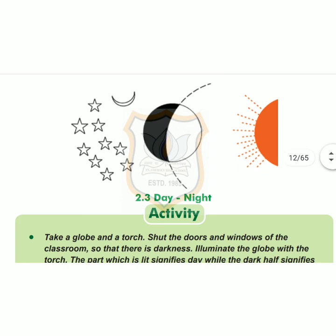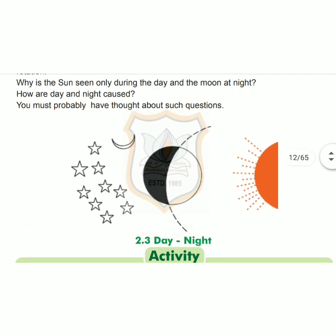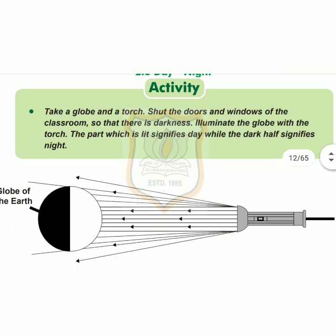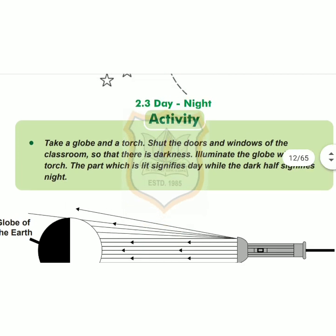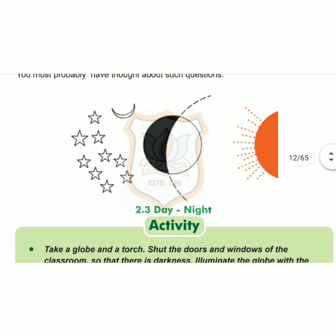With this speed, it takes 24 hours to complete one rotation. Hence our one day is of 24 hours. Day and night are possible only due to the rotation of the earth. Now children, look at the picture of day and night on page number 8. You can see that the part of the earth which faces the sun observes day, while the one on the other side observes night.